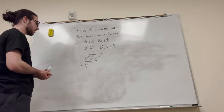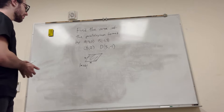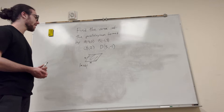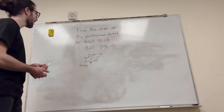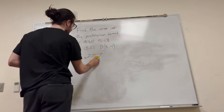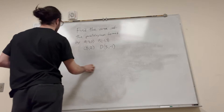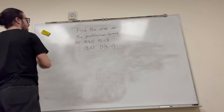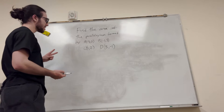So what do we do? How do we use this information for this problem? Well, we don't have any vectors, so we have to make our own vectors. You can actually choose any point, which is pretty cool about this.